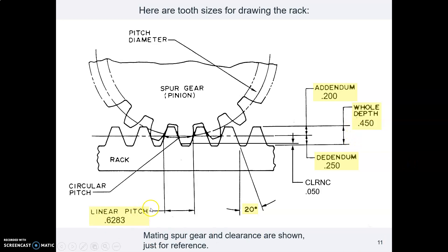The linear pitch, you will not dimension that on your drawing, but you do need to know the pitch because you need to know how far apart are your teeth. From one tooth to the same point on the next tooth in your rack will be 0.6283.